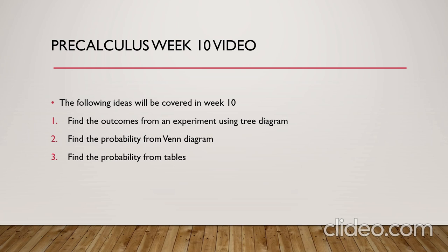We will introduce a new method to find all the outcomes for an experiment called the tree diagram. First, we will know the conditions that must be satisfied in order to use the tree diagram to write all the outcomes of an experiment.